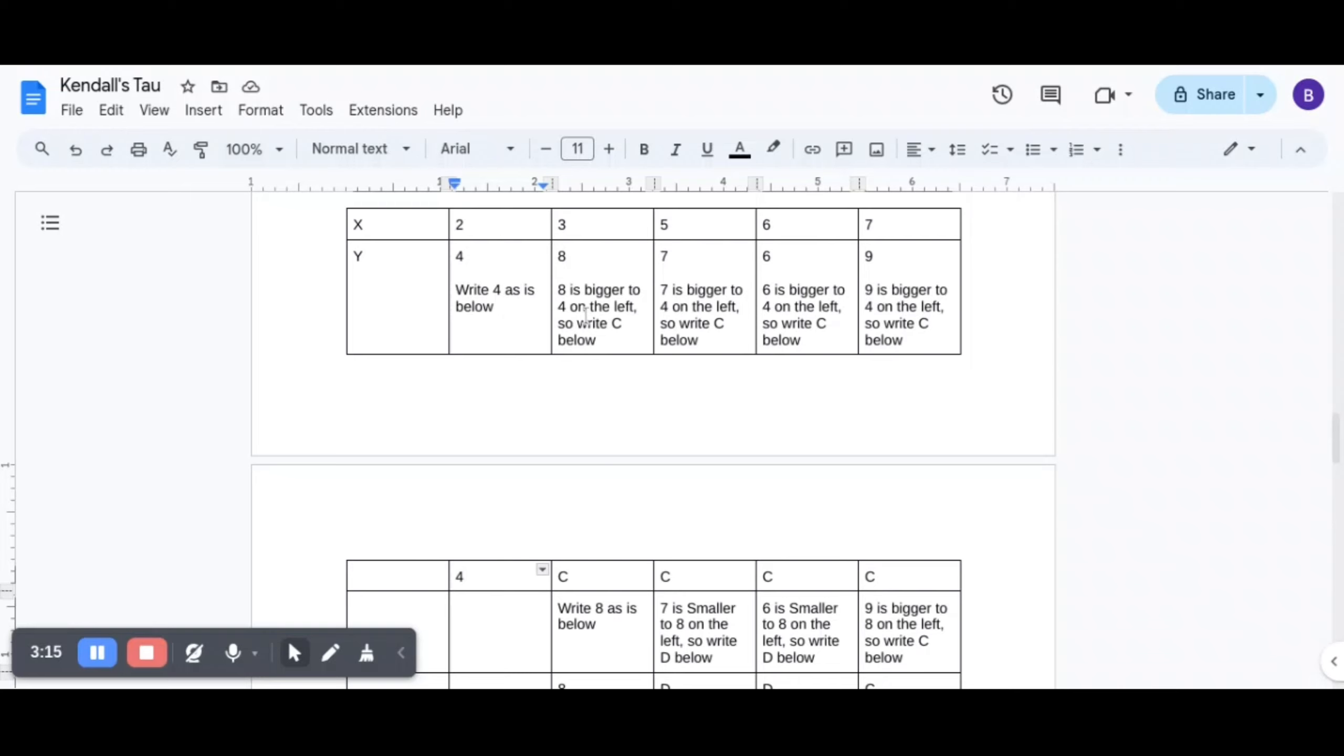Now, we have to understand is 8 bigger than 4? Yes. 8 is bigger to the 4 on the left. So we write C below. So beside 4 we write C. 7 is bigger than 4. So we will write C below.